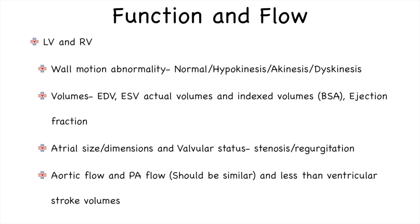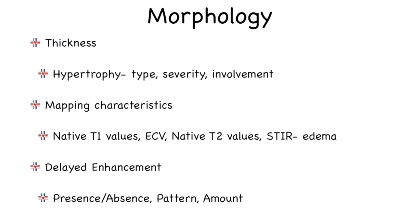Volumetric assessment of ventricles is very important and should be done in every cardiac MR case. End-diastolic and end-systolic volumes — both actual and indexed volumes — should be provided along with the ejection fraction. Atrial size and valvular status, whether there is significant regurgitation or not, also need to be commented on. Aortic flow and pulmonary artery flow are calculated in every case at our institute and compared with ventricular stroke volumes to ensure good quality control and correspondence between ventricular outputs.